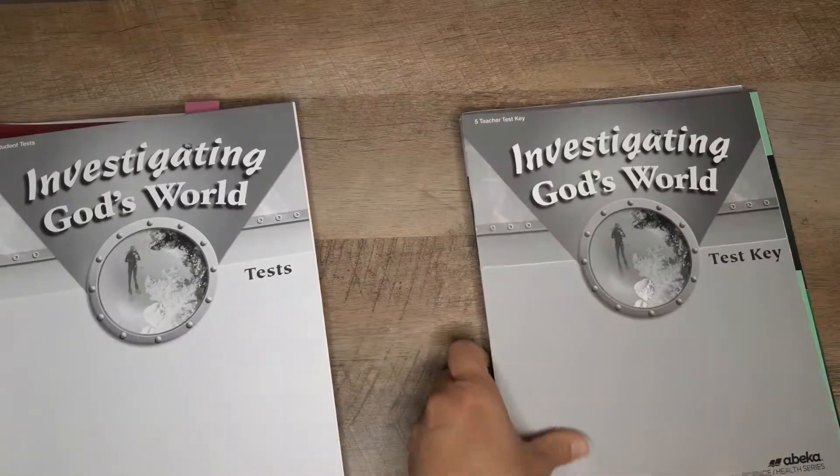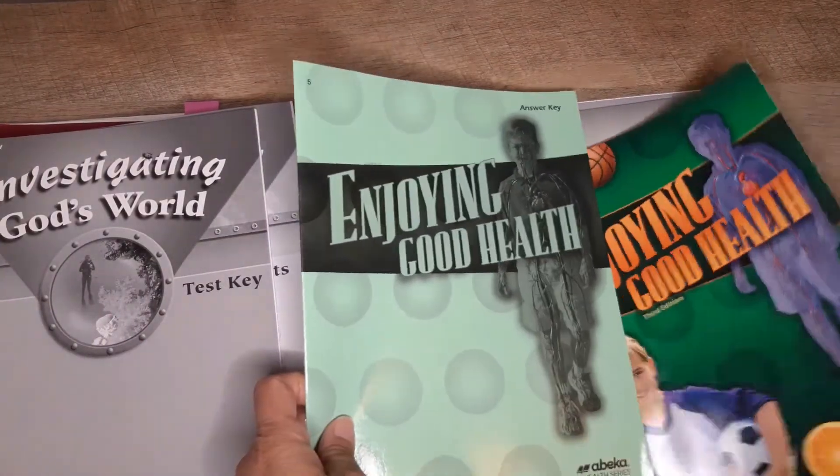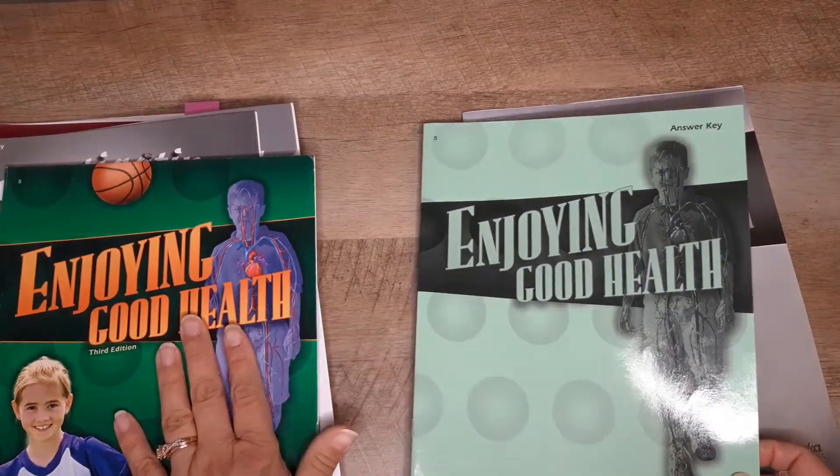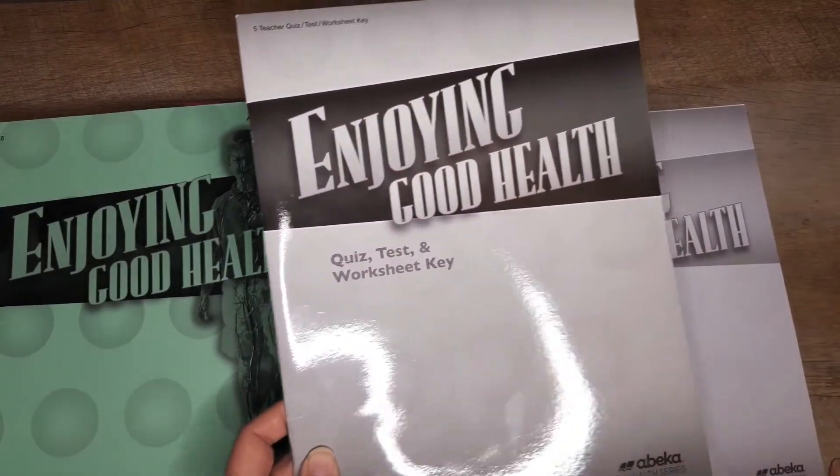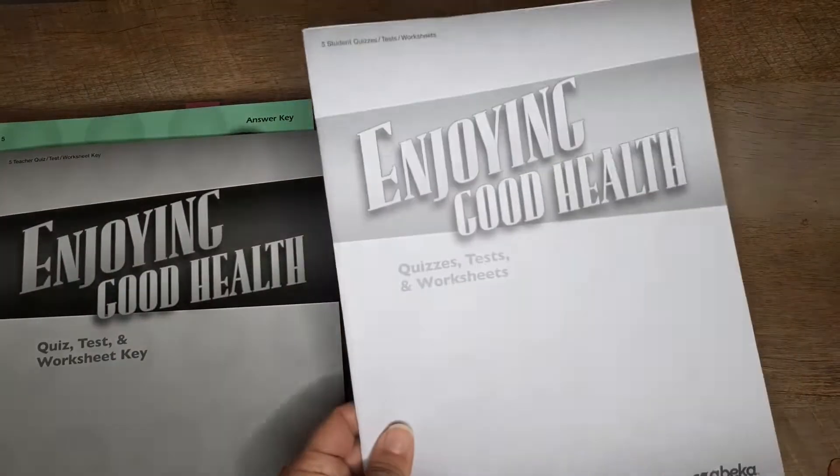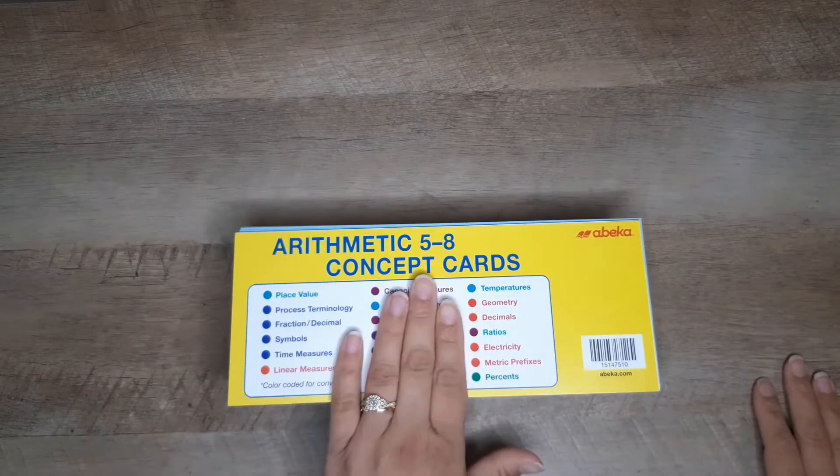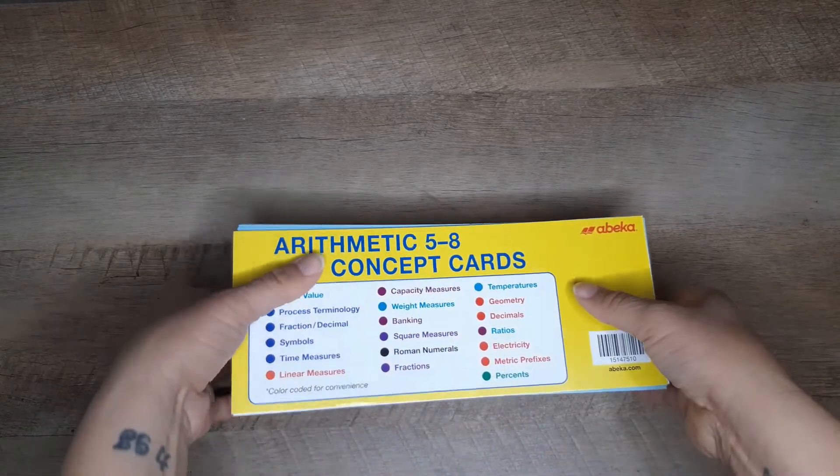You have your student tests, the teacher key, and this is what you get with health. You get the health book as well as the answer key to any questions that might be in here. You'll get the teacher quiz, test, and worksheet key, as well as the student quizzes, tests, and worksheets. I forgot to mention you also get these concept cards for arithmetic. It's a pretty good stack.